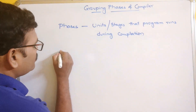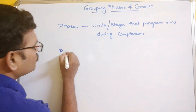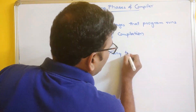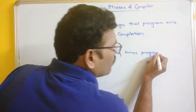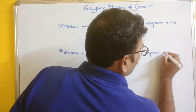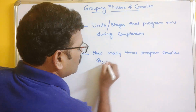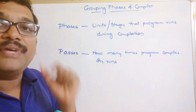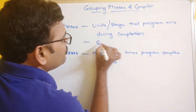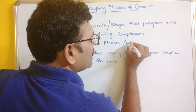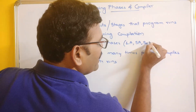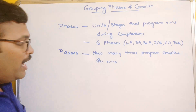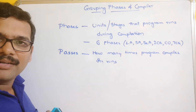Next, we are grouping all these six phases into different passes. A pass refers to how many times the compiler runs the source program. We have six phases: lexical analyzer, syntax analyzer, semantic analyzer, intermediate code generator, code optimizer, and target code generator. Passes are about reducing compilation time.